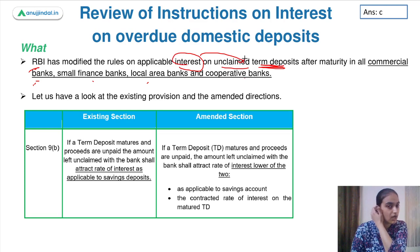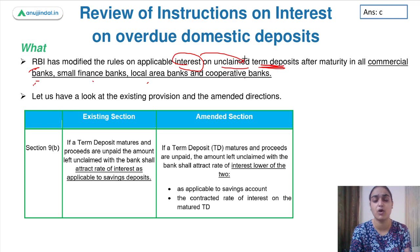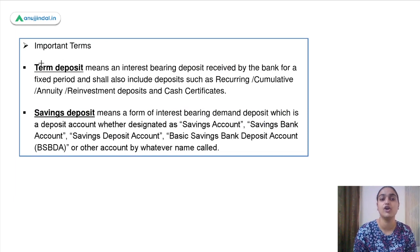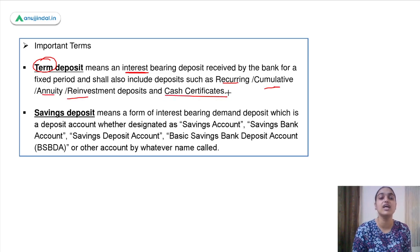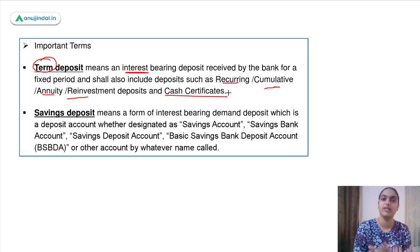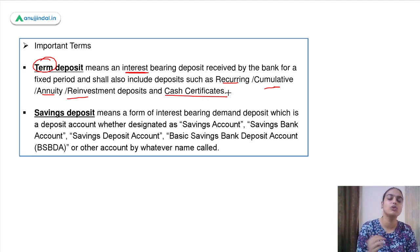You make deposits for a certain time period and earn some interest. These could be your fixed deposits, recurring deposits, cumulative deposits, annuity, reinvestment, cash certificates — different types of deposits. You deposit some amount in a lump sum or in installments. All those types of deposits are categorized under term deposits, where after a set time period you receive the principal amount plus interest.